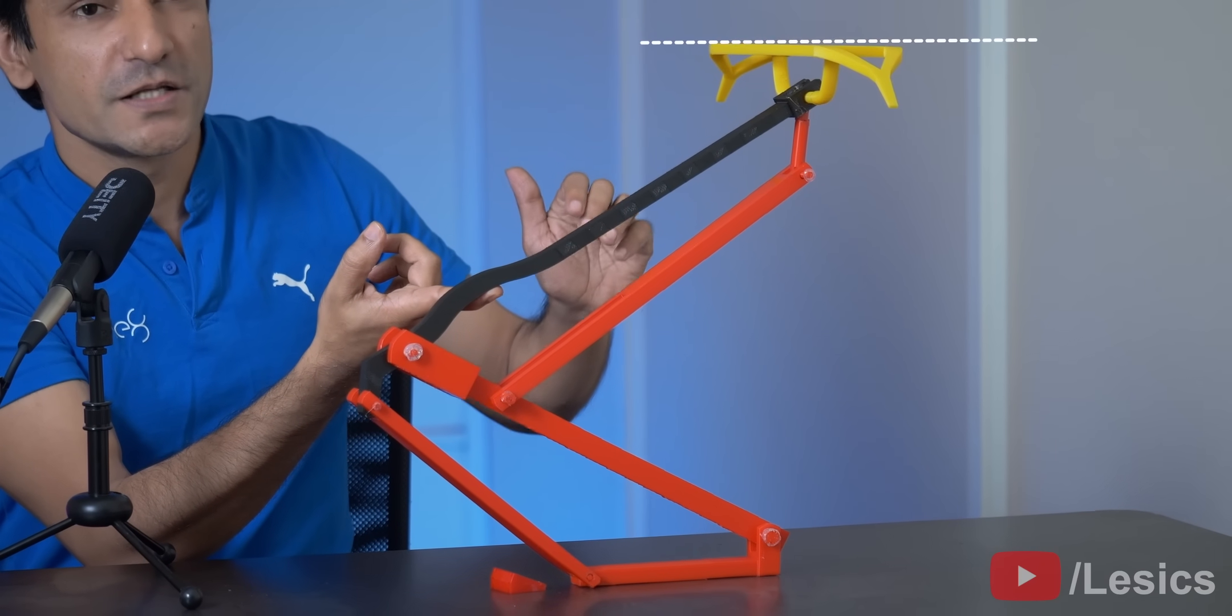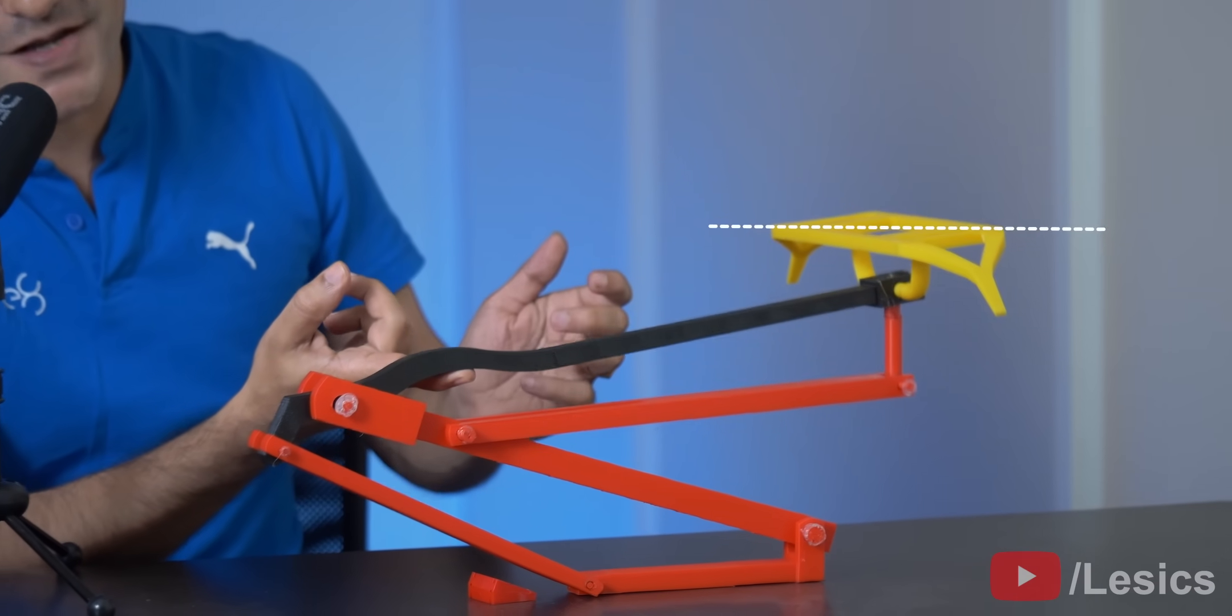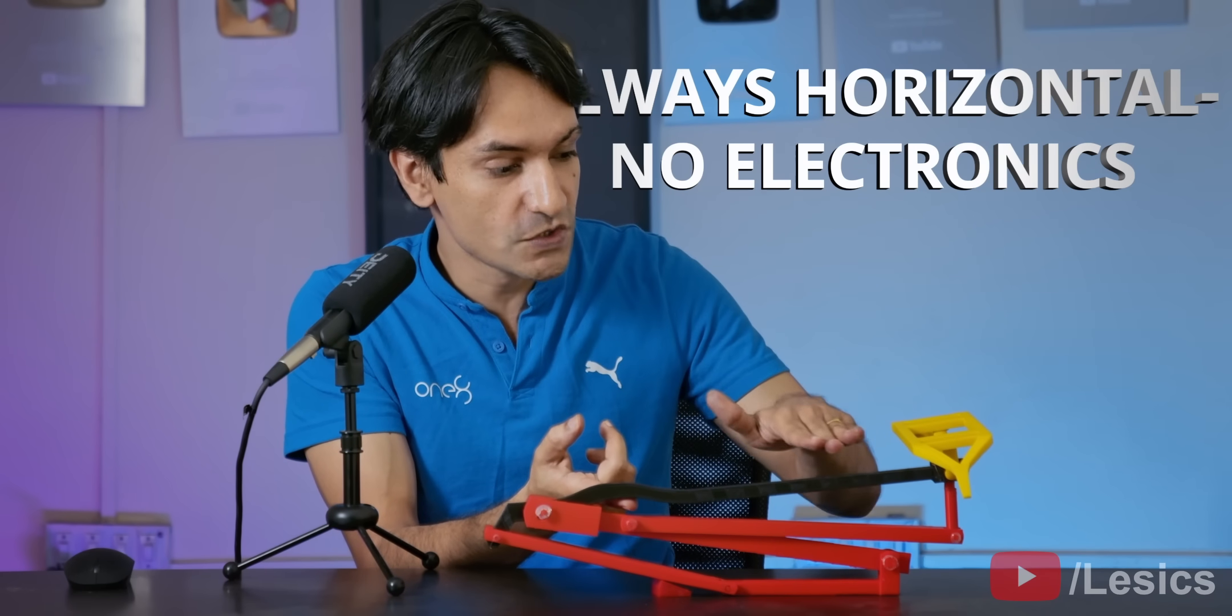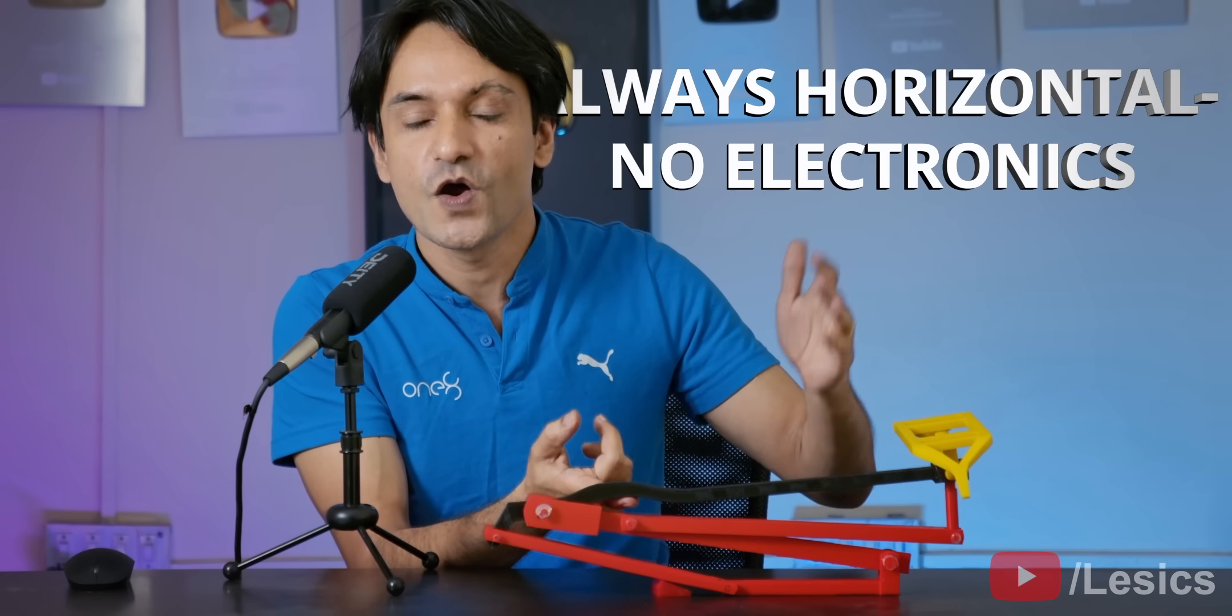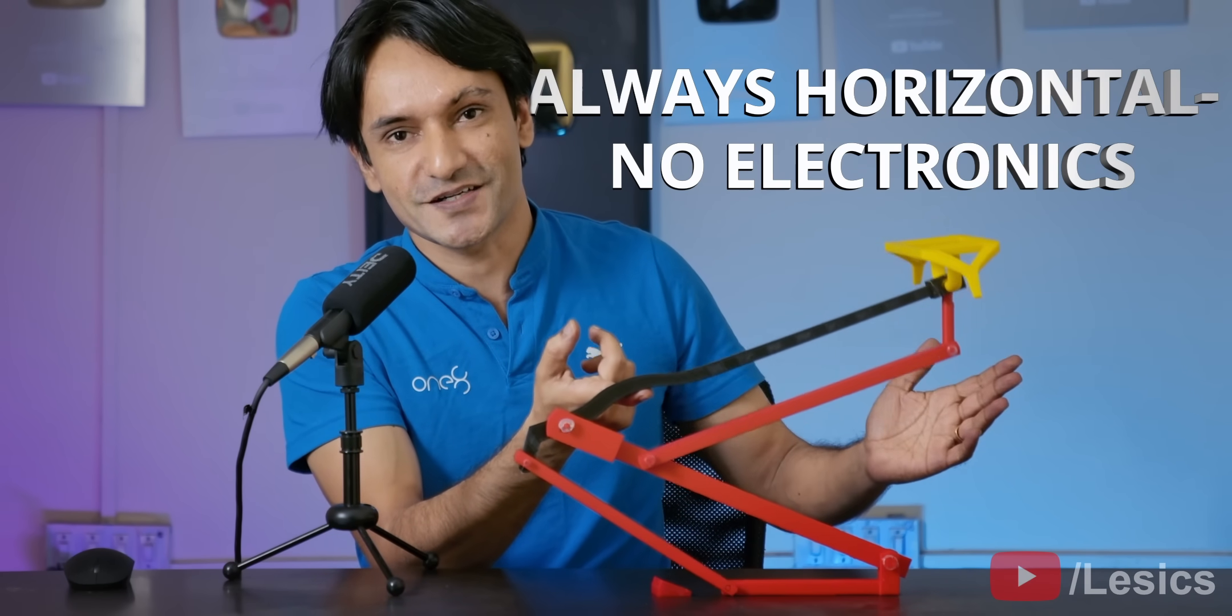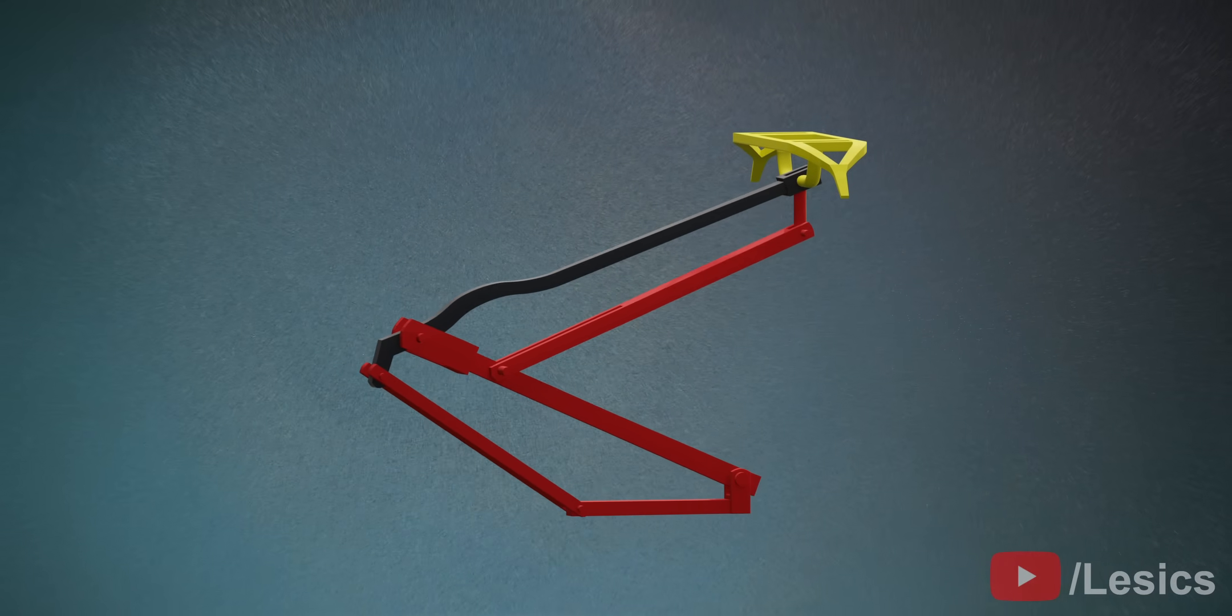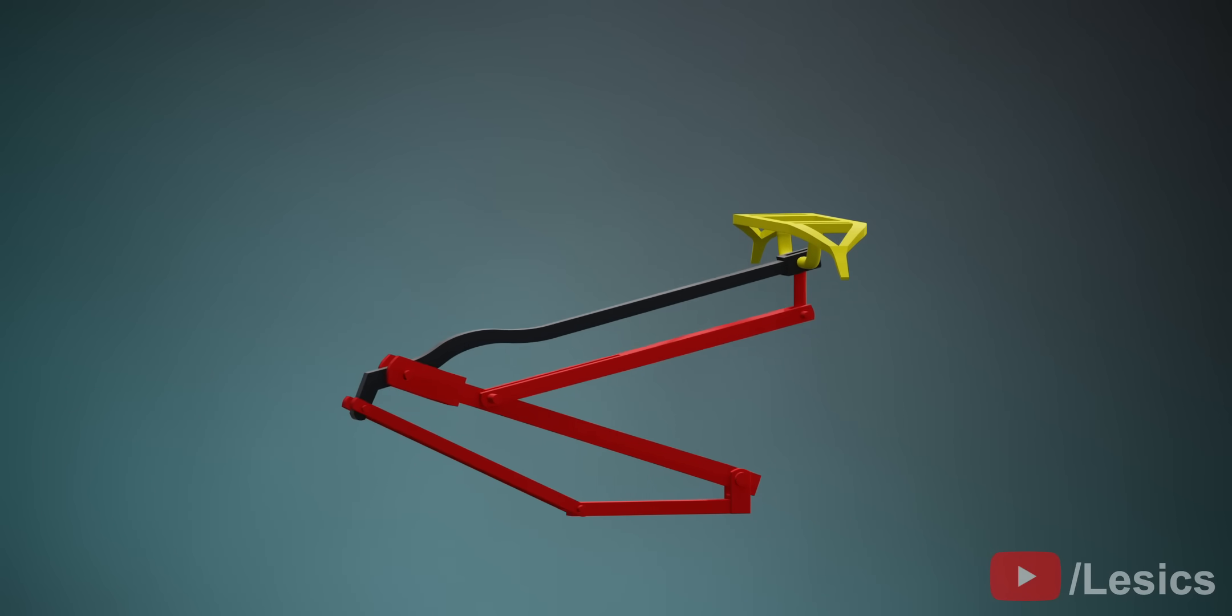In short, the pantographs act like a gimbal. How did the engineers achieve this? How did they manage the horizontal orientation of the current collector without using electronic control? Before we dive deeper into the details of a modern pantograph, let's first explore why trains use one.